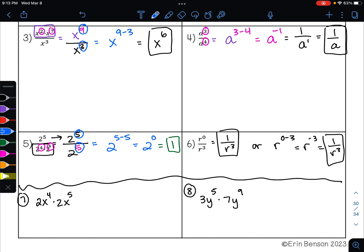What you'll do in problems like this is you're going to begin by multiplying your coefficients. Here 2 times 2 is 4. We're going to keep our base of x, and we are going to add our exponents. 4 plus 5 is 9. So here our answer is 4x to the 9th.